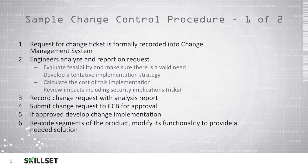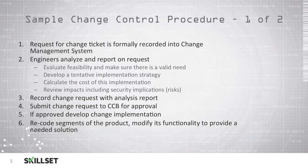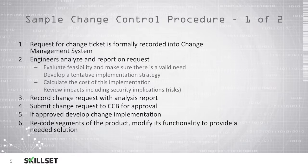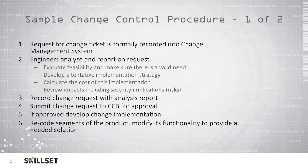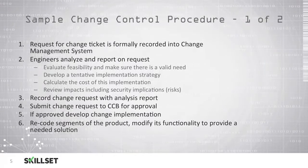Here we have a sample change control procedure. The first step is to request for a change ticket to be recorded into the change management system. Next, engineers will analyze and report on the requested changes, evaluate the feasibility, and make sure there is a need for this change to occur. They will develop a tentative implementation strategy, calculate the cost of the implementation, and review the impacts including any security implications or risks. Next, they will record the change request along with their analysis report, and then the change request will be submitted to the change control board for approval. If the change control board approves the change, you will need to develop change implementation and then recode different segments of the product to modify its functionality so that you can provide the solution that has been requested.